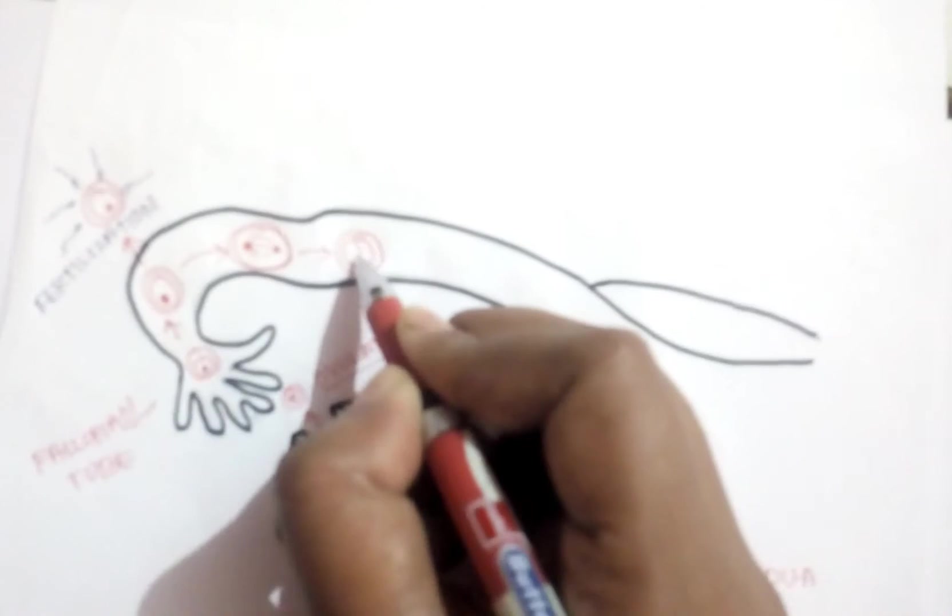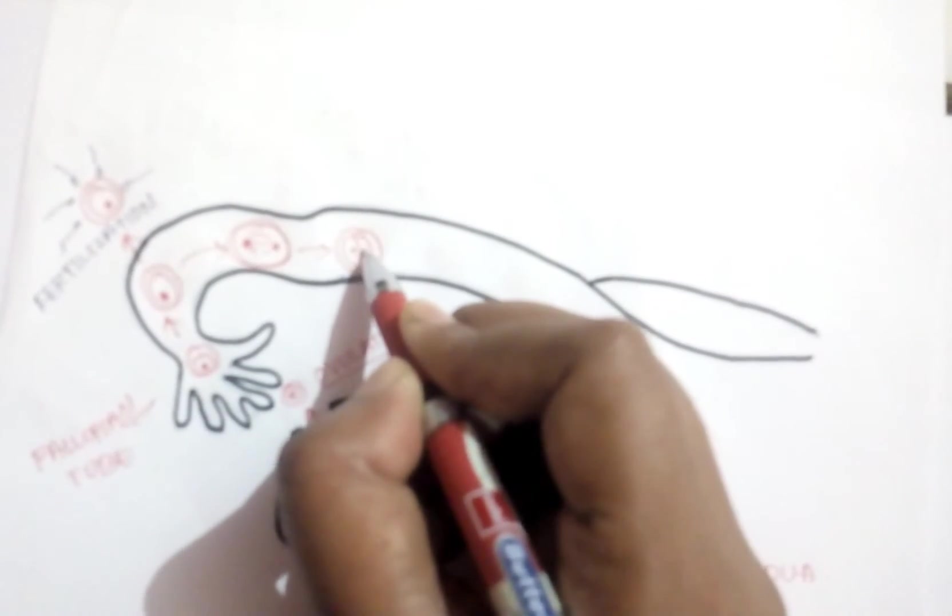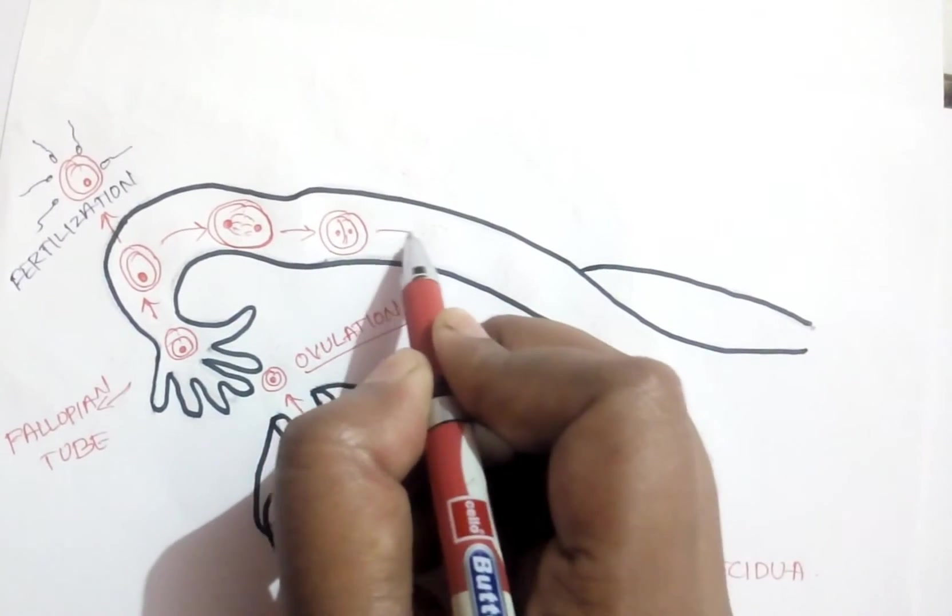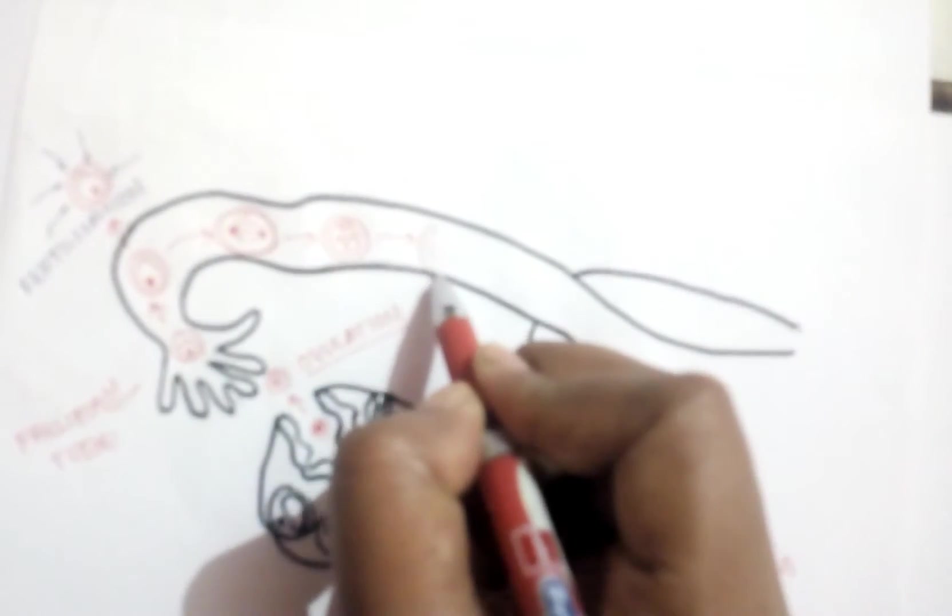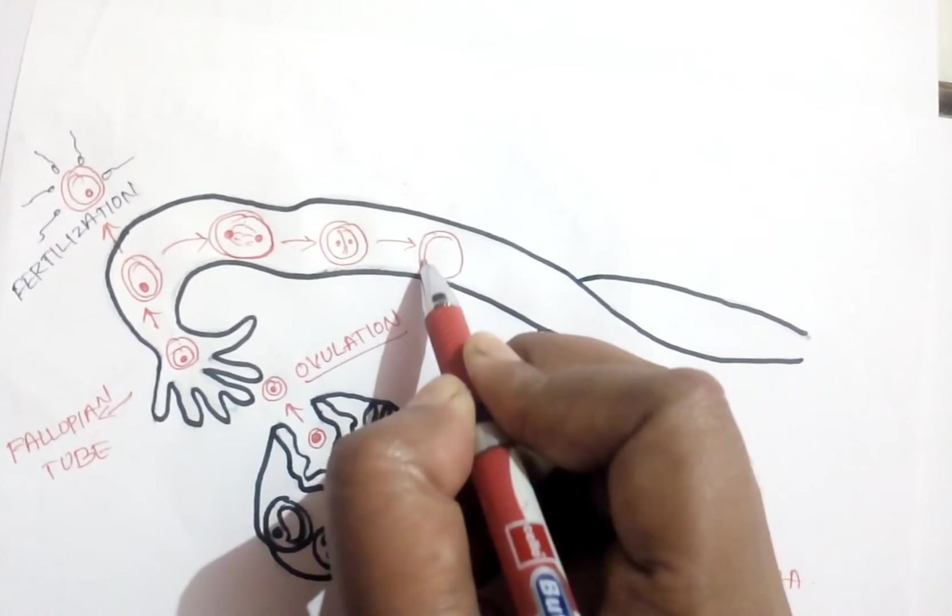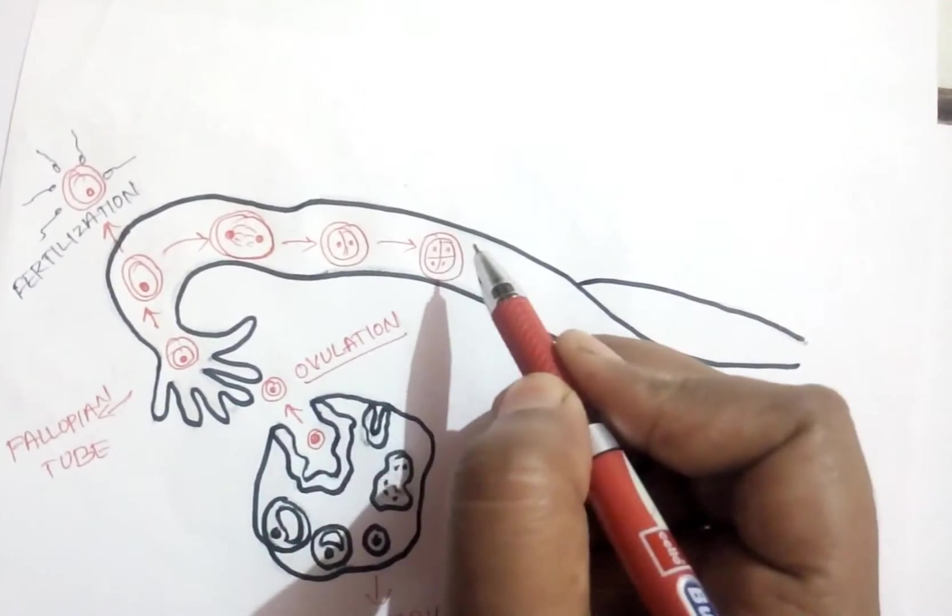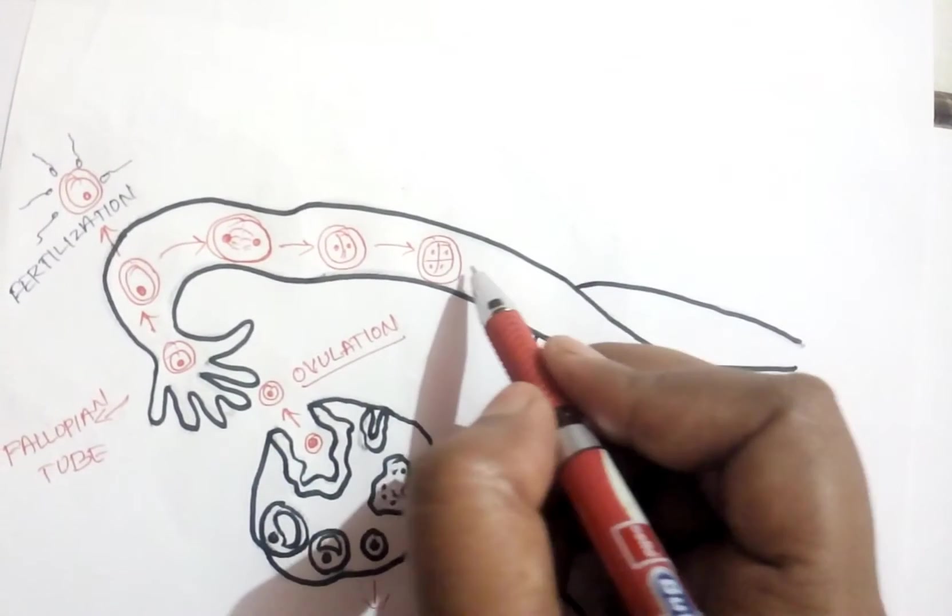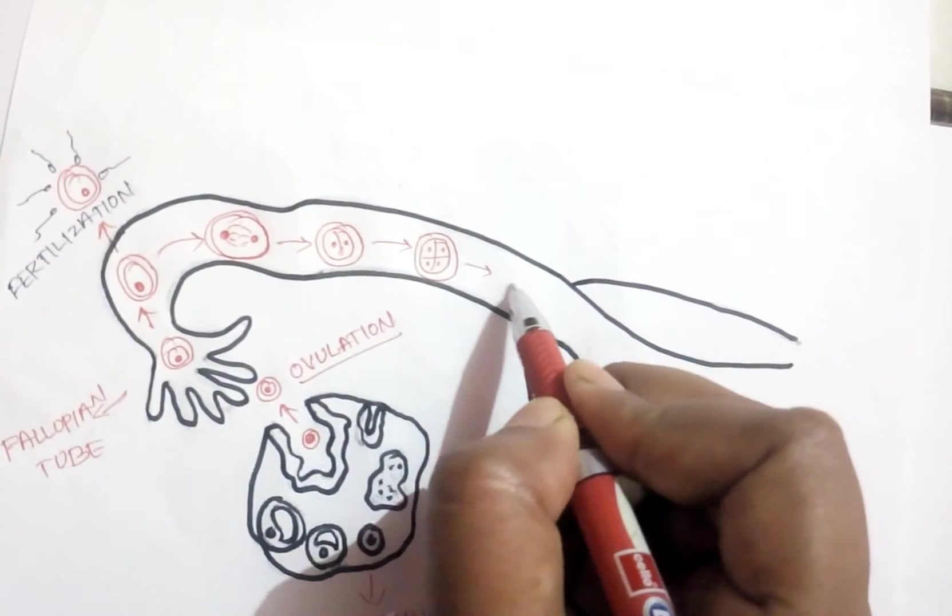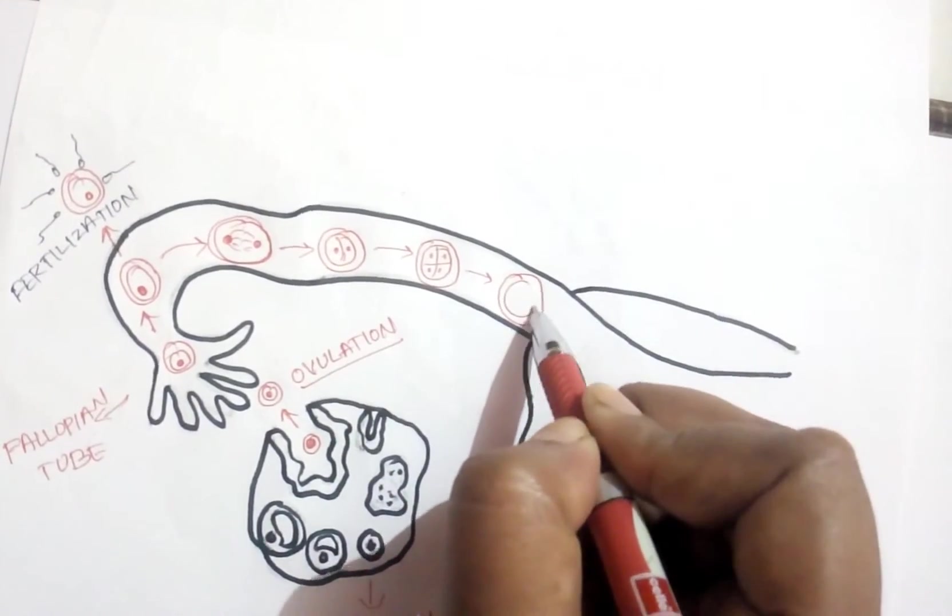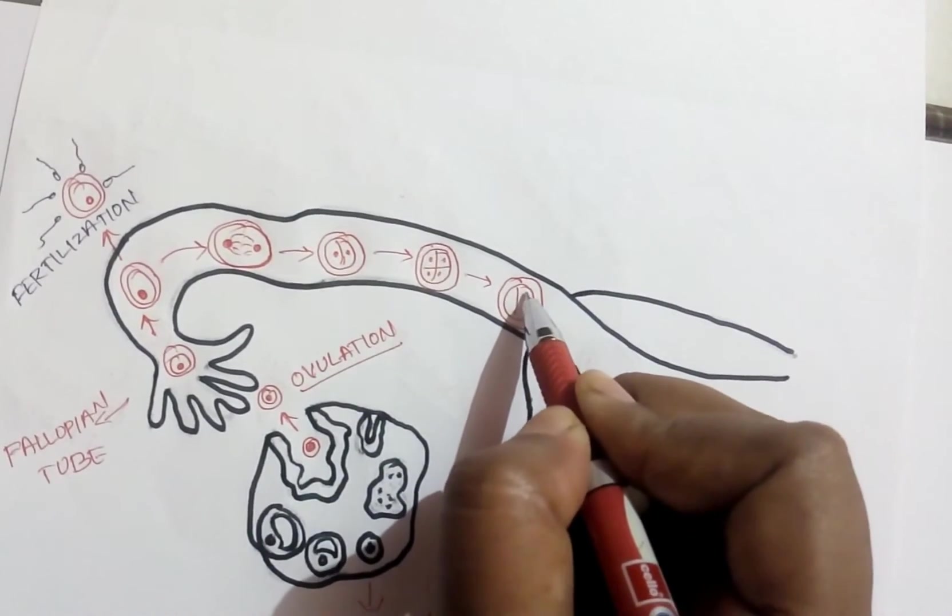First, it gets into two cells and further divides into four cells. By the second day, it will become four cell. And by the third day, it will further divide to form eight celled body, that is a structure which is having eight cells.